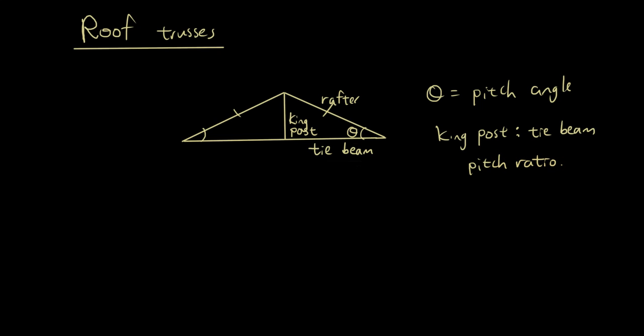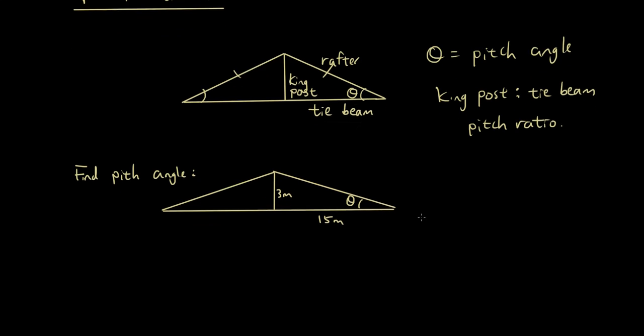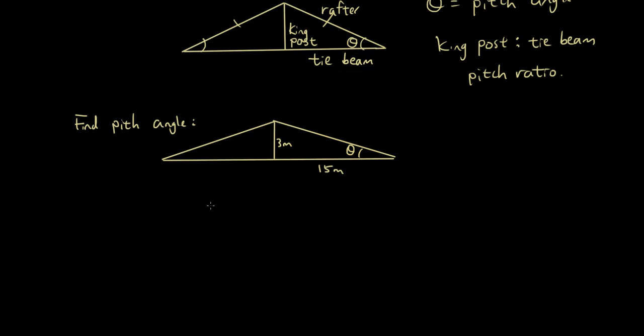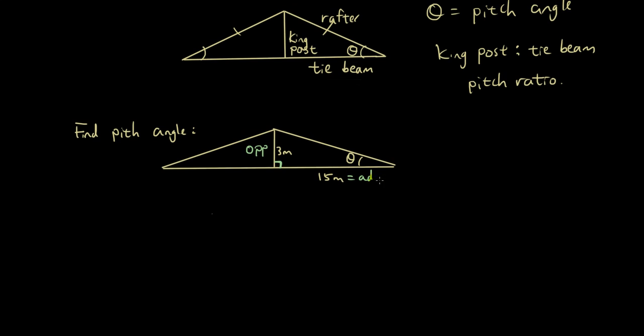Let's talk about some of the math involved. Find the pitch angle in this roof truss. To find theta, we need to use a bit of trigonometry. Since the king post is at right angles to the tie beam, this is a right angle triangle. If theta is over here, then this side would be the opposite and this side would be the adjacent. So we have tangent theta equals opposite over adjacent.